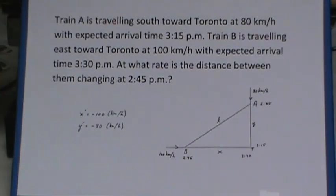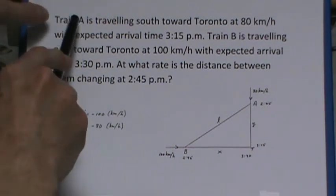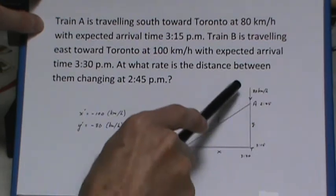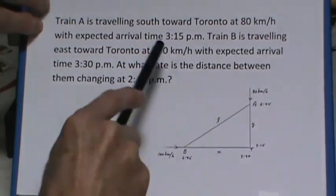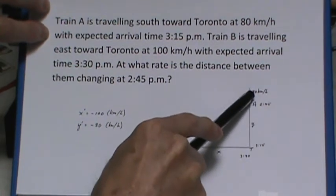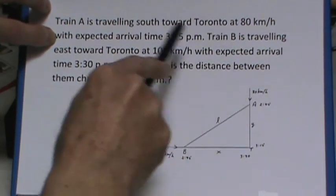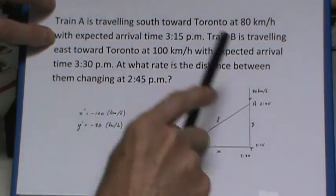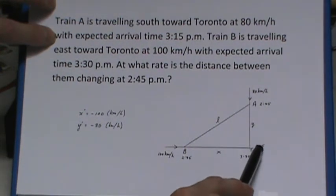Okay, the second question I'm going to look at: this time we've got trains traveling. Train A is traveling south toward Toronto, coming down at a speed of 80 kilometers per hour. I've marked that on the diagram, with expected arrival time of 3:15. So I've marked the 3:15 here, that's when this train is expected to arrive in Toronto.